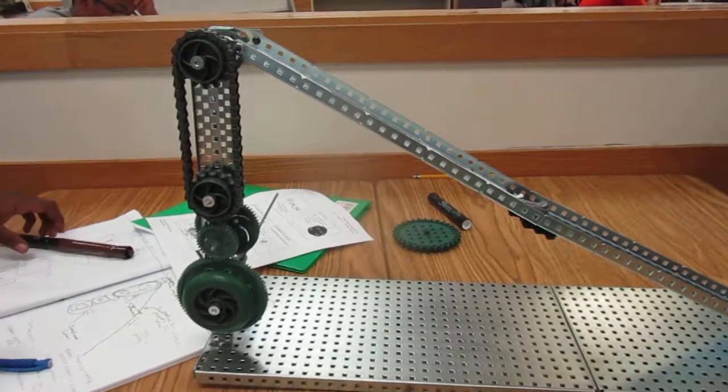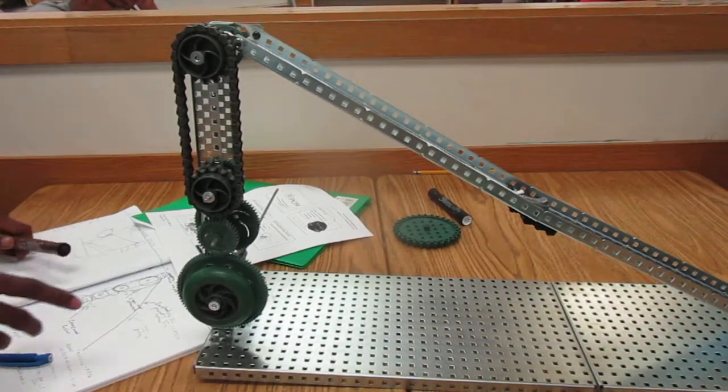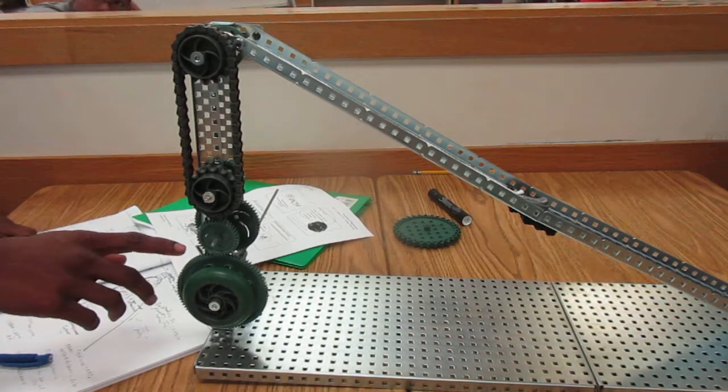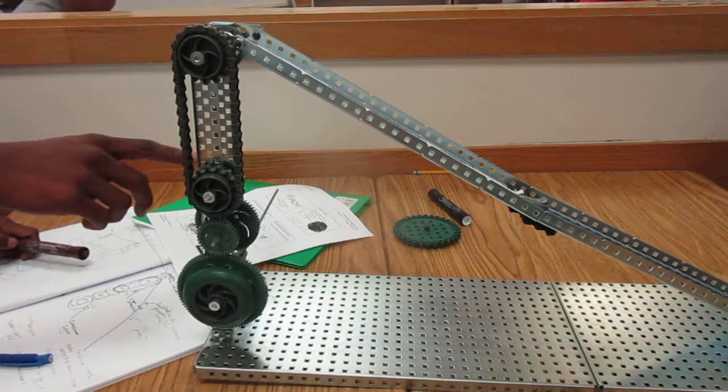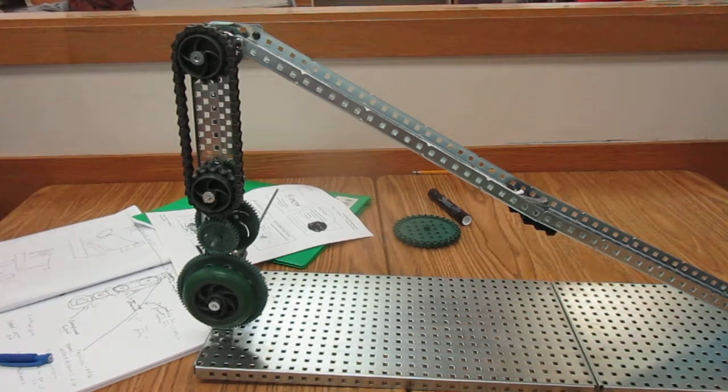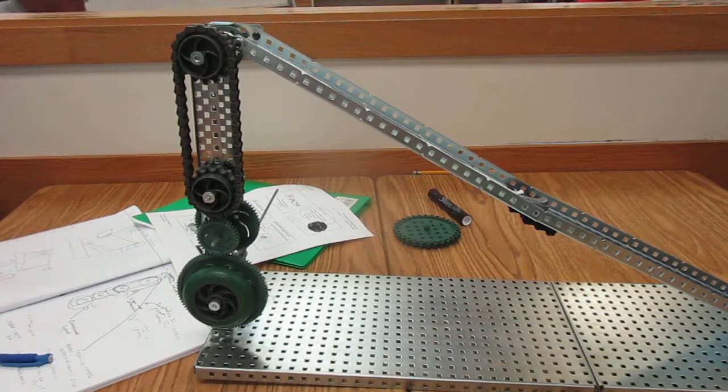We got the small gear with a number of teeth. And for the big one, the number of teeth we got was 84, and the small one we got 34. And what we did was divide 36 by 84, and we got 42.